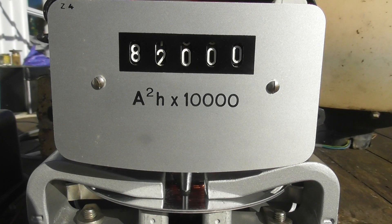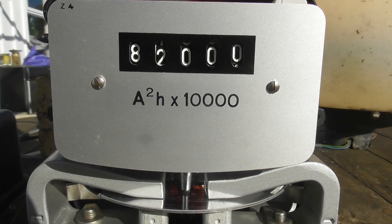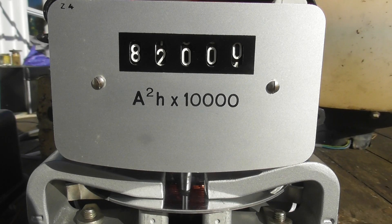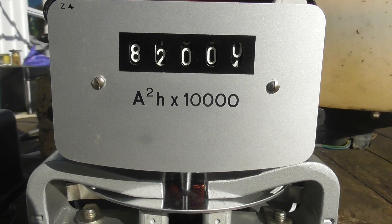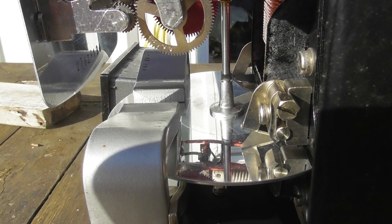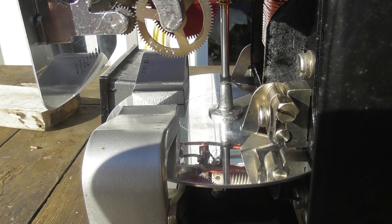82,000 amp square hours times 10,000. Typical Landis & Gyr mirror type disc.